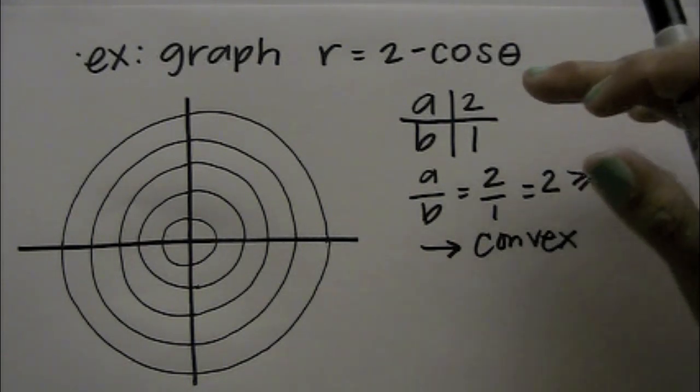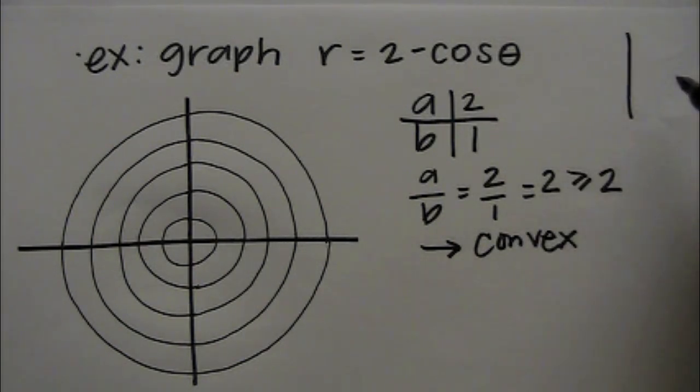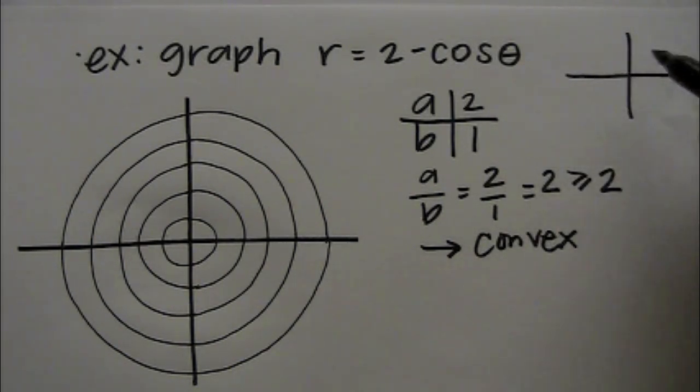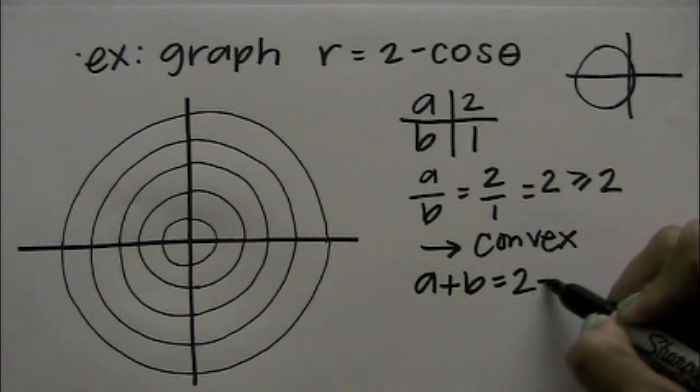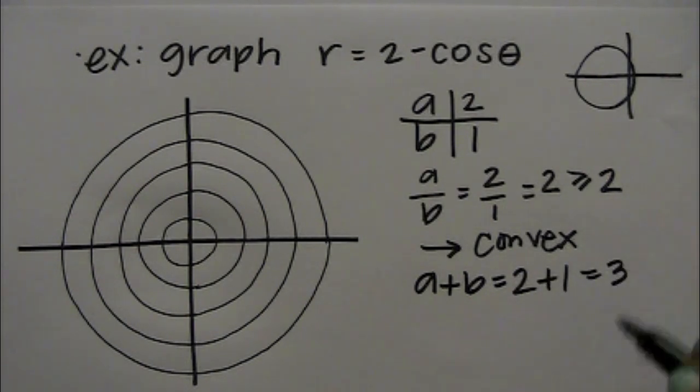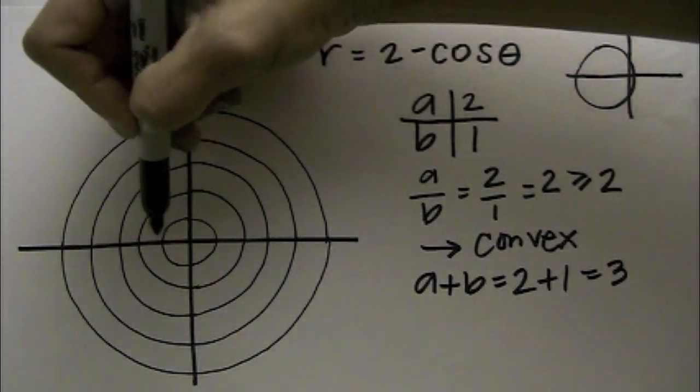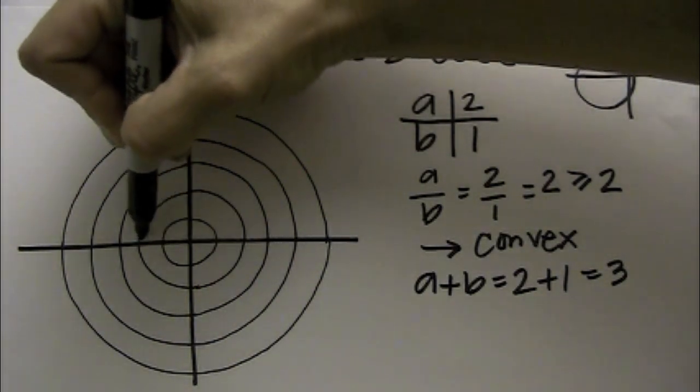Without doing any work, because it's cosine, I know that the graph will lie along the x-axis. Because this is negative, we know that our graph will end up on this side. Next if we take a and add b, you get 2 plus 1, which is 3, and that tells us how far the graph will be stretched on the main axis. So we're going to count out 3: 1, 2, 3.